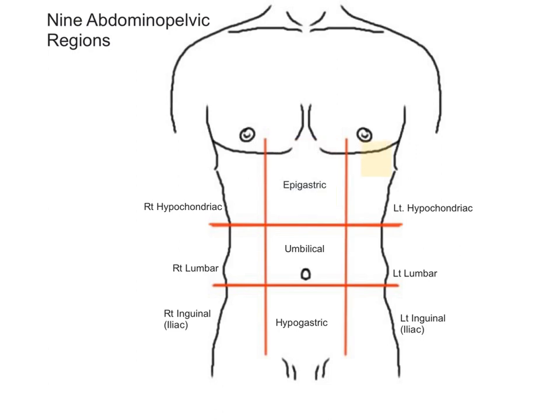The left hypochondriac region contains the spleen and parts of the stomach, the left kidney, and large intestine. The right lumbar region contains parts of the large intestine, small intestine, and right kidney.